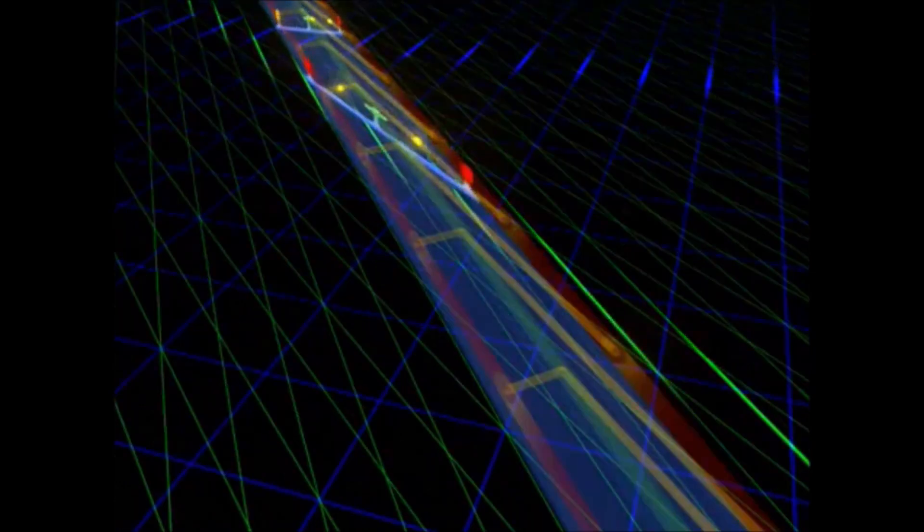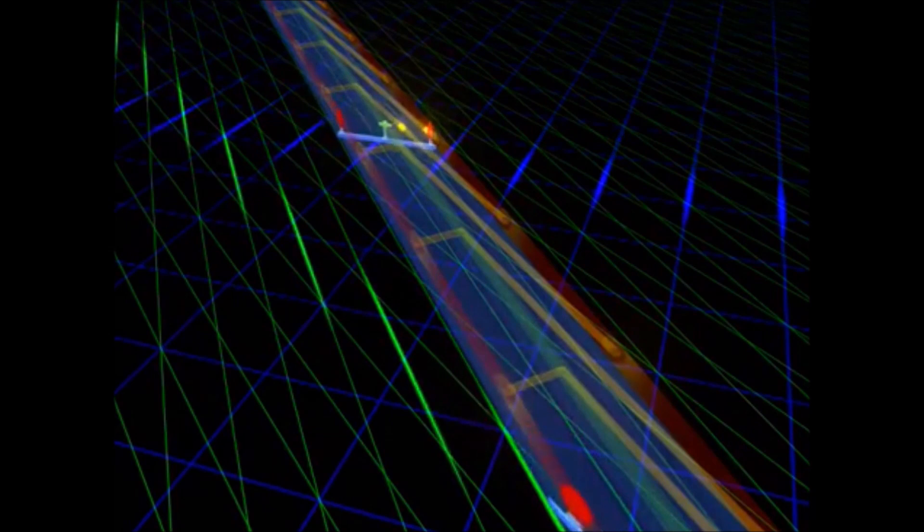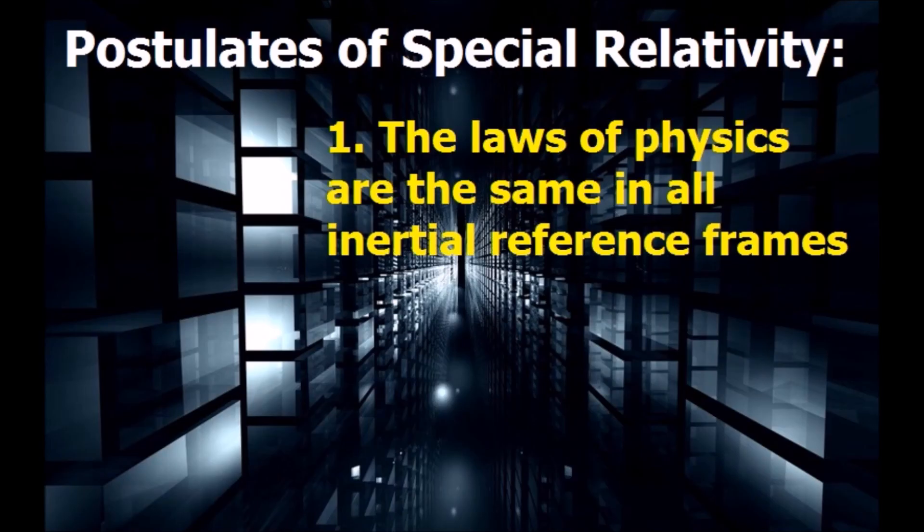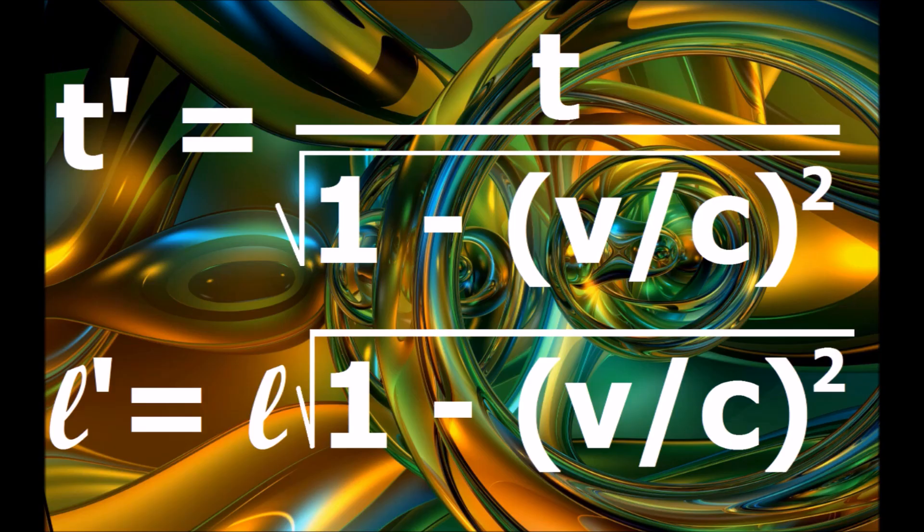Two central features of special relativity are time dilation and length contraction, which follow naturally and inevitably from the two postulates of special relativity: that the laws of physics are the same in all inertial reference frames, and that the speed of light is the same in all inertial reference frames. If you start with these two postulates, these two equations will necessarily follow. These equations make testable predictions that have been vindicated time and time again.